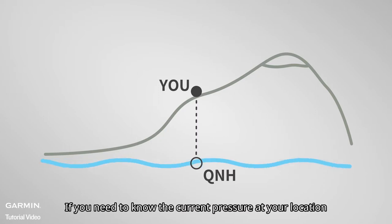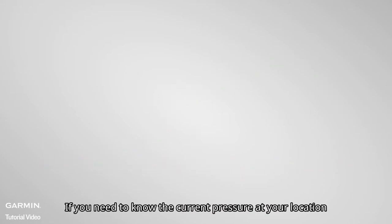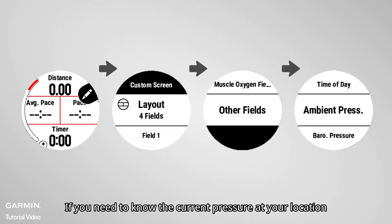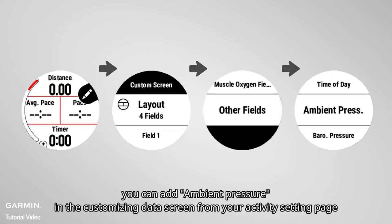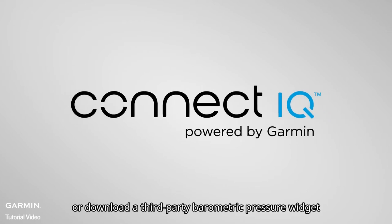If you need to know the current pressure at your location, you can add ambient pressure in the customizing data screen from your activity setting page, or download a third-party barometric pressure widget.